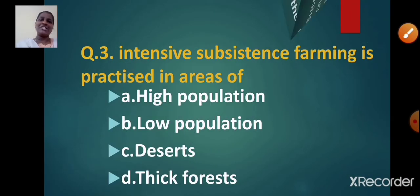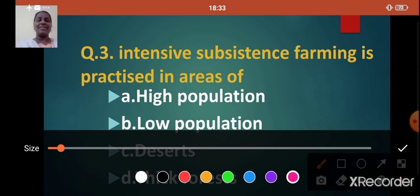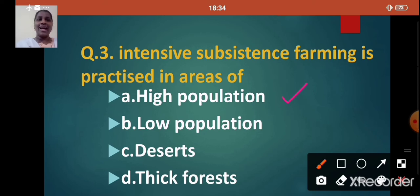Next question: Intensive subsistence farming is practiced in areas of — option A: high population, option B: low population, option C: deserts, option D: thick forests. The correct answer is option A, high population. Intensive subsistence farming is practiced in areas of high population.